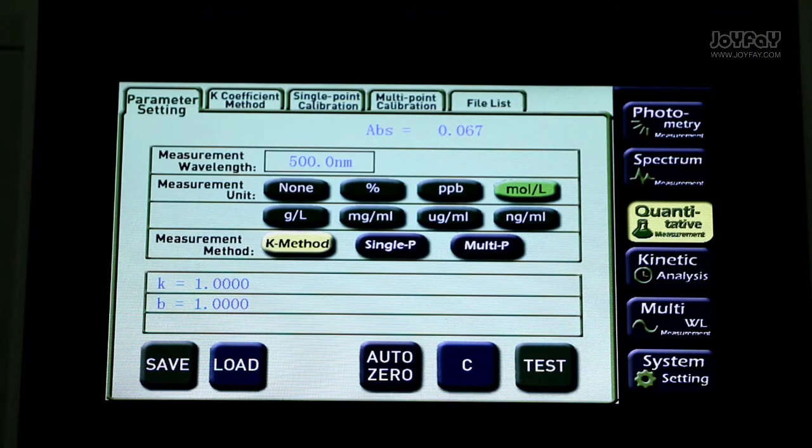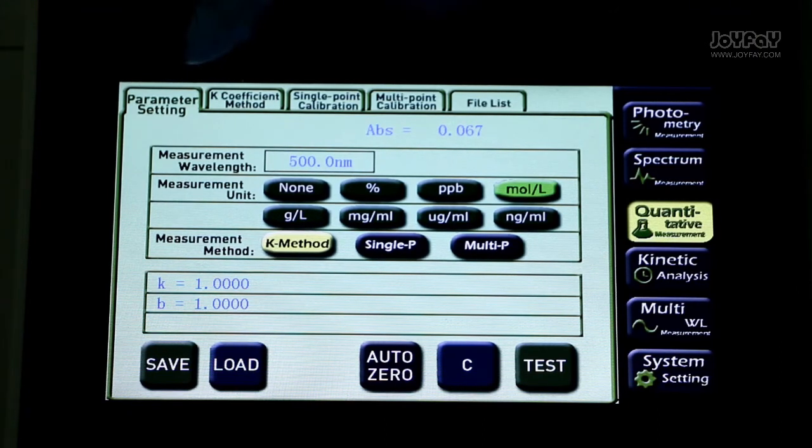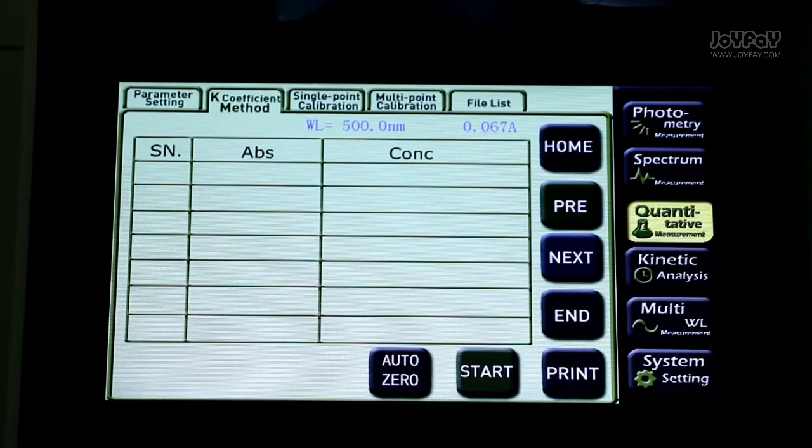The third method, quantitative measurement. Here we have five tags: parameter setting, k coefficient method, single point calibration, multipoint calibration, and file list.